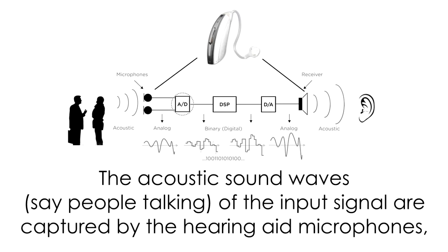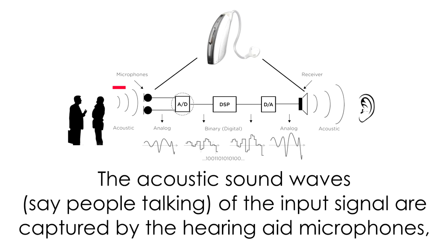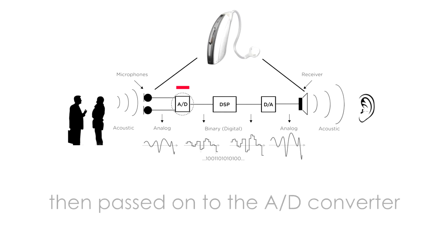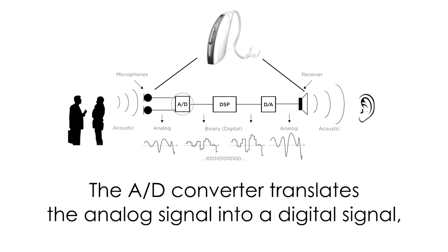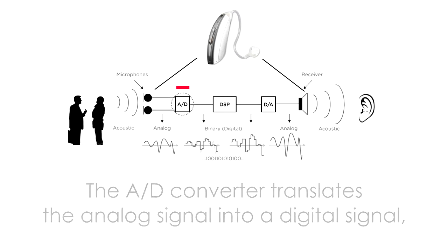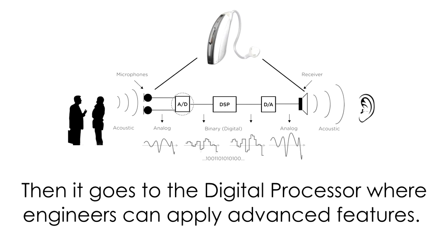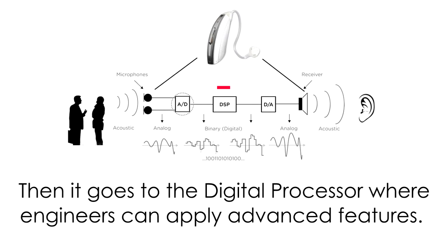The acoustic sound waves — say, people talking — of the input signal are captured by the hearing aid microphones, then passed on to the analog to digital converter. The analog to digital converter translates the analog signal into a digital signal, then it goes to the digital processor where engineers can apply advanced features.